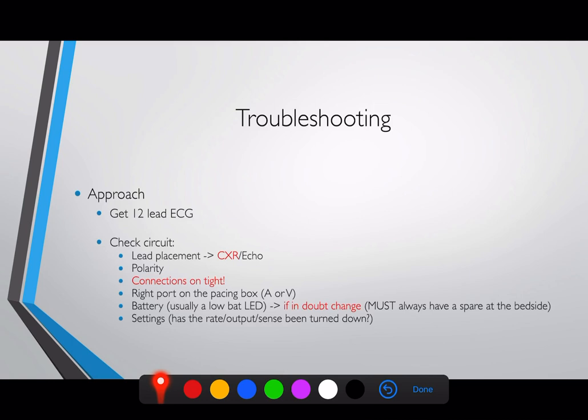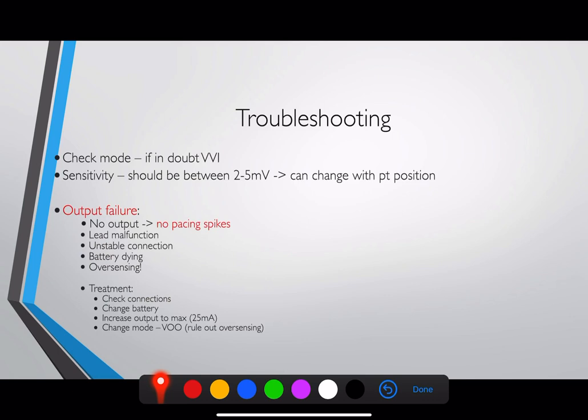Then take a very systematic look at the pacing system. Look at the lead placement — use the chest X-ray from when it was put in, and get a repeat, because you'd be surprised how often leads have moved unnoticed. If you're trained in echocardiography, pop a probe on to see where the pacing wire is and whether it's still sitting in the right ventricular apex. Check the polarity — sometimes leads have come off and been put back the wrong way around, or the box was changed and the leads accidentally swapped.